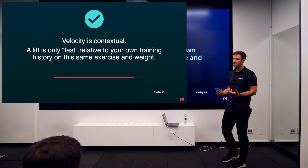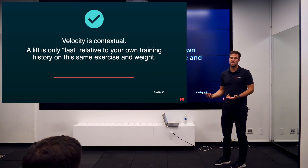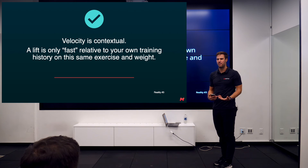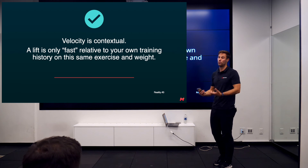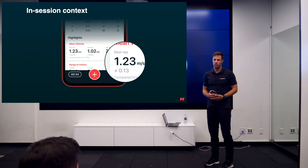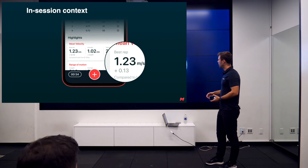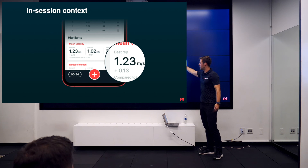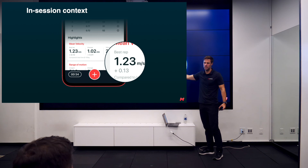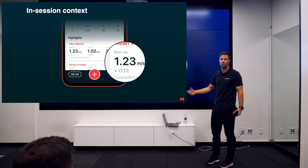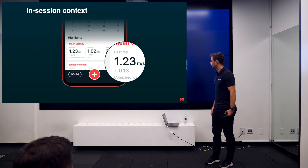Velocity is contextual. A lift is only fast relative to context — what's a good speed? It depends what your last set was. Last time you squatted 100 kilos, how fast was it? Now you're squatting 100 kilos again — how fast was it now? And did we do more reps, more volume? One of my favorite numbers in the metric app is the context number: that's your velocity today compared to last time you did that weight. In the future, we'll have comparisons to a 30-day average or all-time best, so you can start competing with yourself and seeing how today's session tracks against your own history.